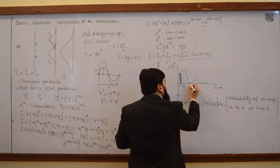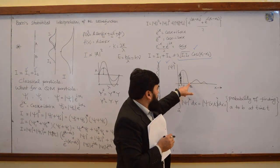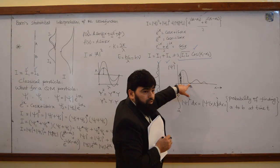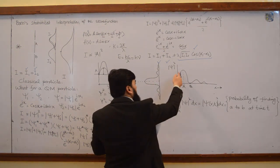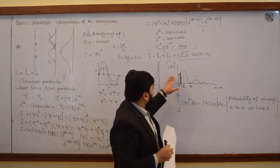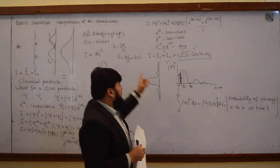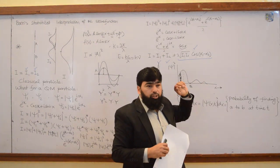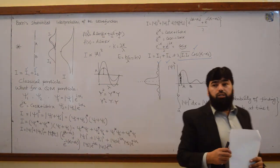If point B is where the probability density is touching zero, then the probability of finding the particle from A to B is zero. Similarly, on the other side it is the replica. So you are getting the Born statistical approximation — we say statistical because some probability is here, some probability is here, some probability here and so on. This function is going on, so we will have statistical information about finding the particle.